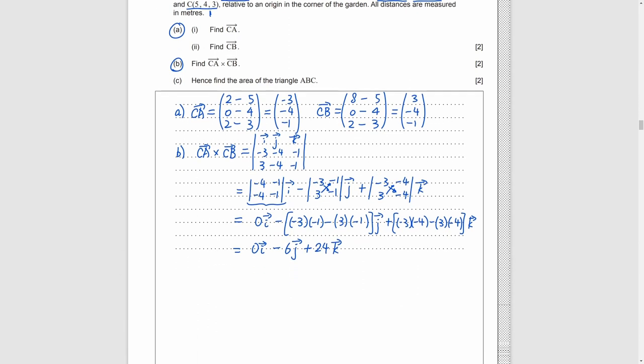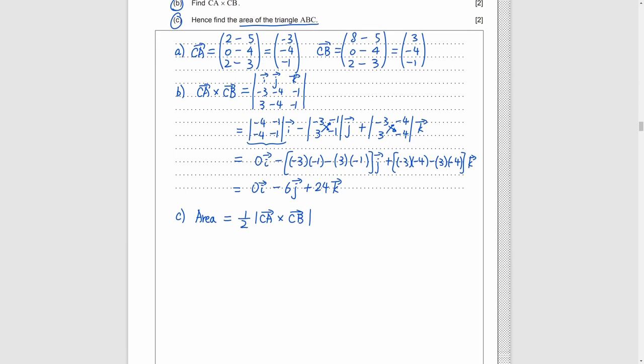Part C. We need to find the area of ABC. Area is equal to half the norm of the cross product of CA and CB. As we have found the cross product in part B, so we can calculate its norm: square root of the sum of the square of the numbers above. Finally, we get root 153.